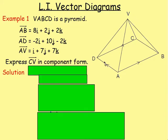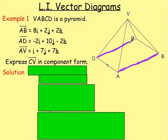We want to express CV — the vector going from C to V — in component form. The way I always think about this is you can only go along roads that you know. You have to know the vectors in order to use that road. So we know this vector going from A to B. We know that anything that length in that direction will also be the vector AB. So going from D to C is also the vector AB.